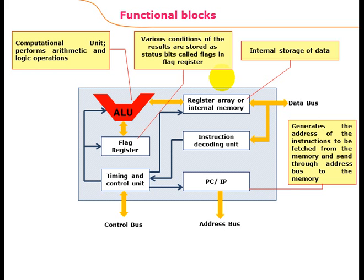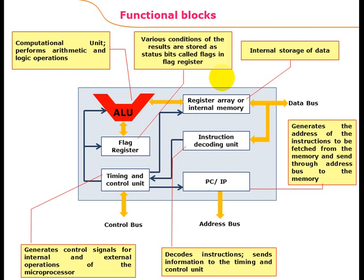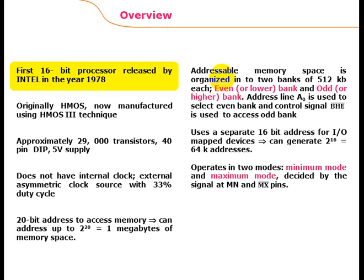The program counter (PC) or instruction pointer (IP) generates the address of the instruction to be fetched from memory and sends it to the address bus. The instruction decoding unit decodes the instruction and sends information to the timing and control unit. The timing and control unit generates control signals for internal and external operations of the microprocessor.